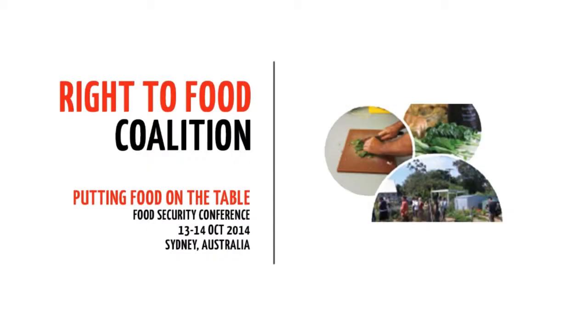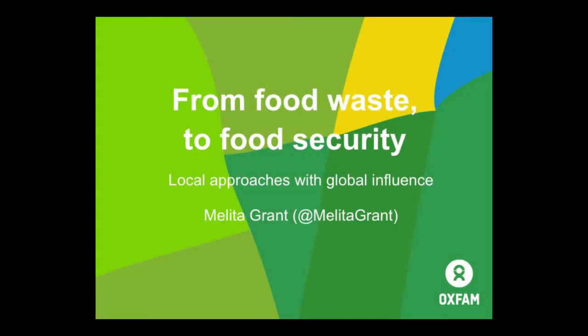This presentation is based on Oxfam's Grow campaign. Oxfam started the Grow campaign about four years ago and it's a campaign that is looking at the underlying causes of poverty. We've heard some of the big issues surrounding poverty in Australia and some of those systemic causes of poverty and inequality globally, and that's where the Grow campaign picks up those sentiments and looks at it from a global perspective as to what is causing food insecurity globally.